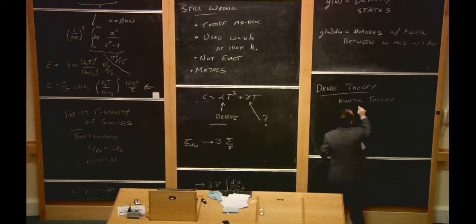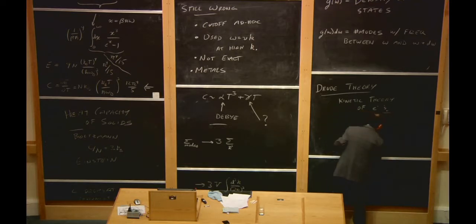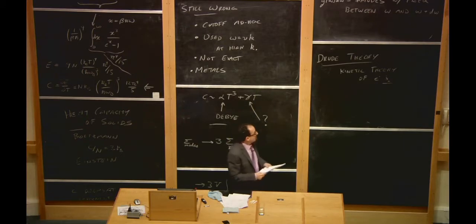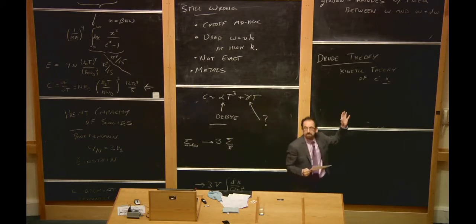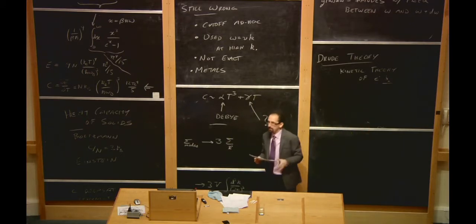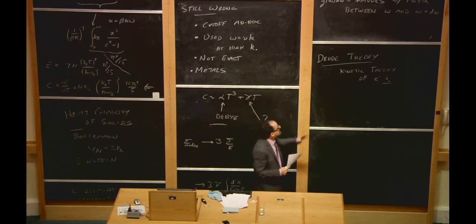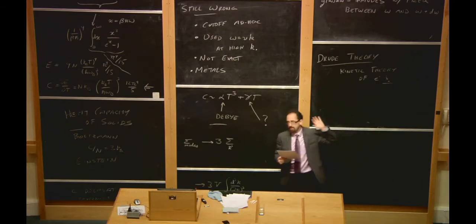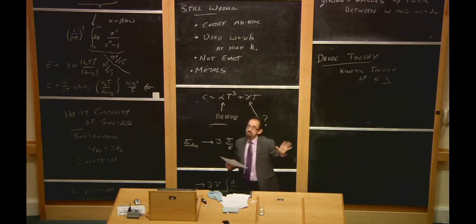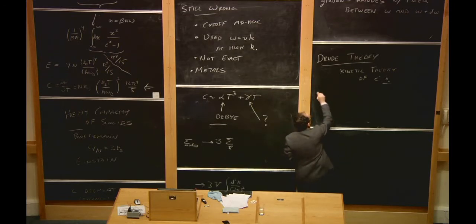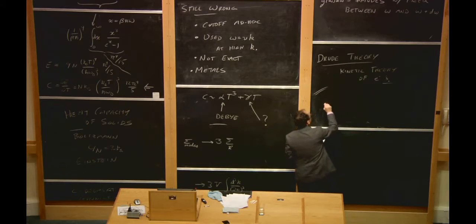This leads to the Drude theory — a very crude classical kinetic theory of electrons, very much like the kinetic theory of gases studied last year in thermal physics. It works extremely well for a lot of things, particularly for semiconductors. We're going to attack electron transport in metals using Drude theory first, and then improve on it later.